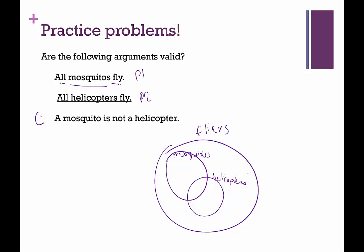Then the conclusion is a mosquito is not a helicopter. I don't think we get to say that because there could be some overlap between mosquitoes and helicopters. It doesn't really give us specifics about the mosquitoes and helicopters, right? So the mosquito could be here, or it could be in the overlap of mosquitoes that are helicopters. So I don't think this is a valid argument. We're going to say that it is invalid.